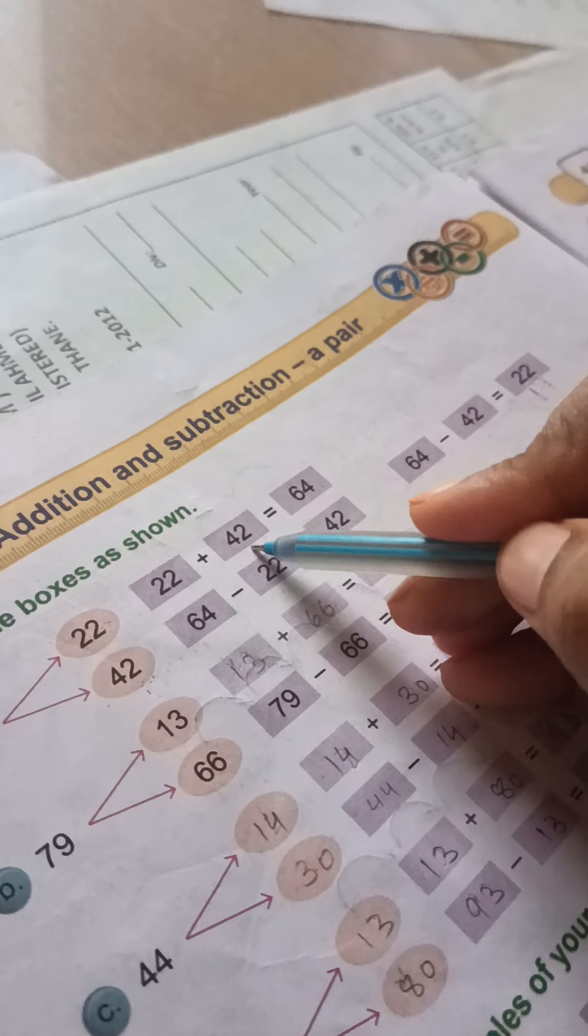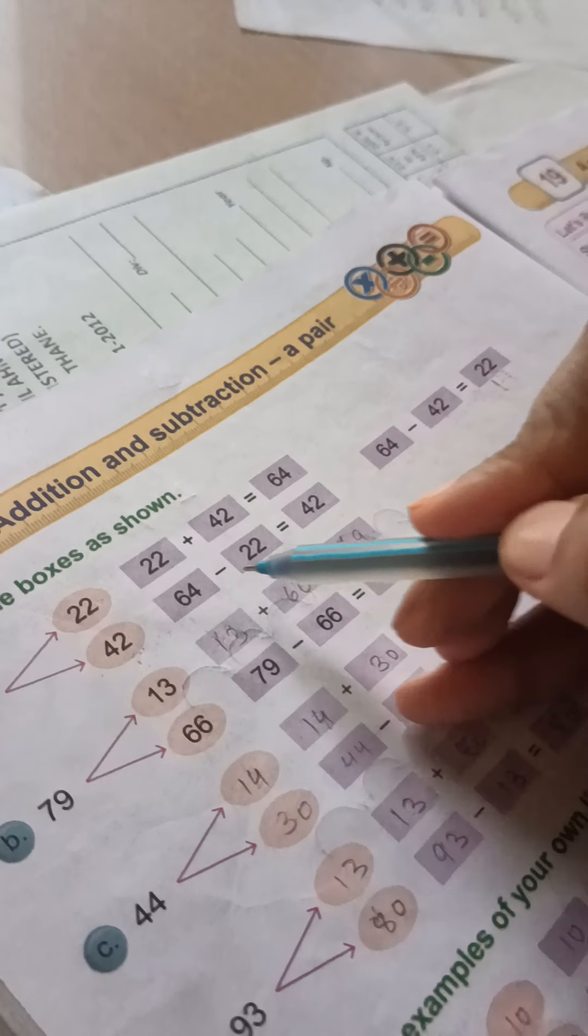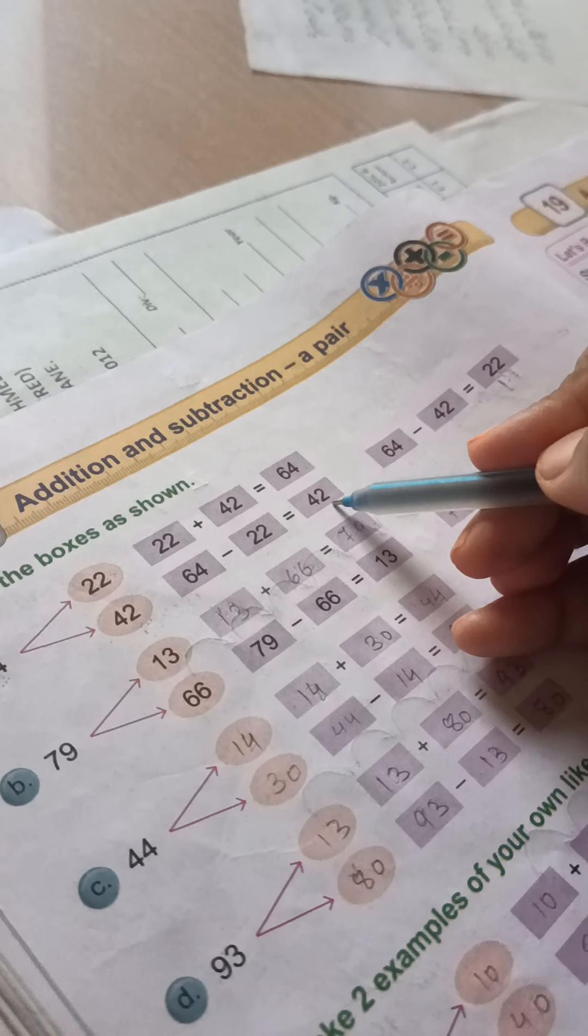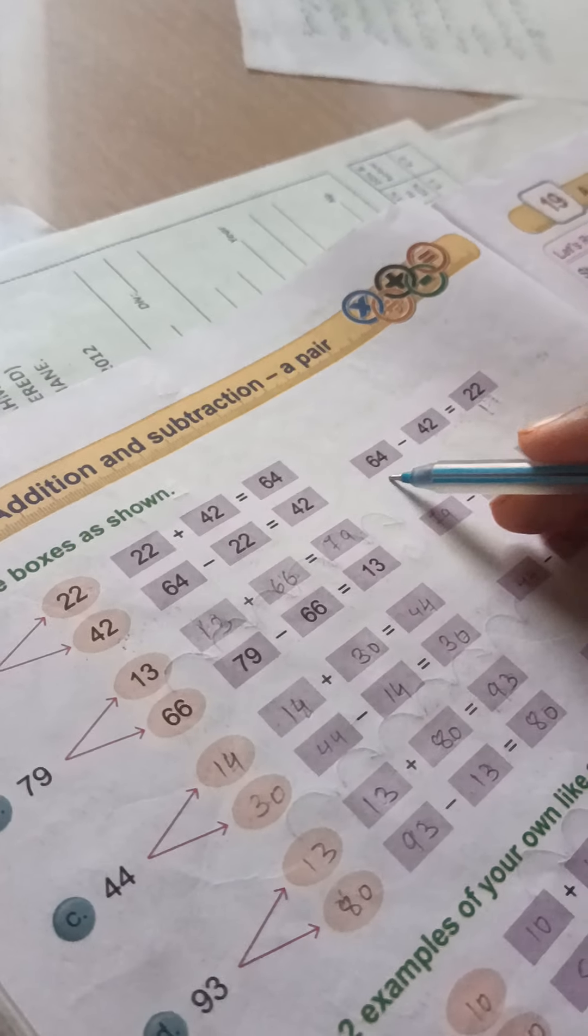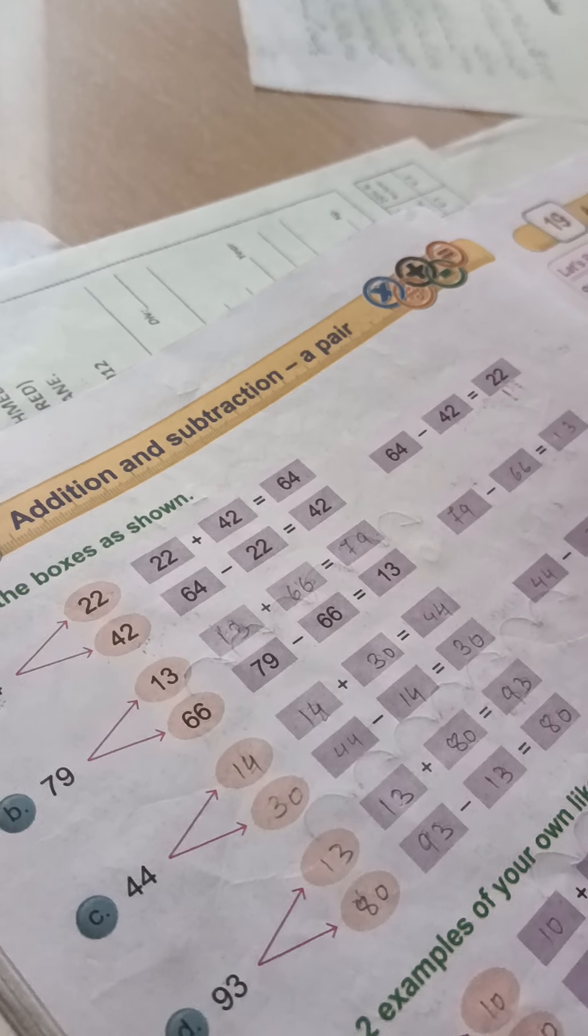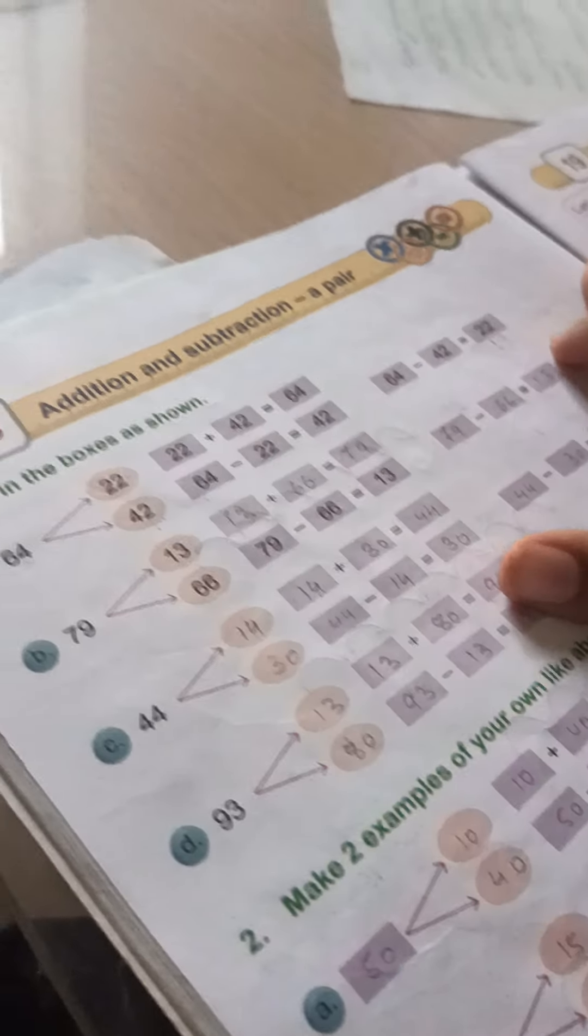Let's start. 22 plus 42 equals 64. As we have told, 64 minus 22 equals 42. In 64, if we have 42 minus, the answer is 22. We will reverse the numbers here. We will do the same.